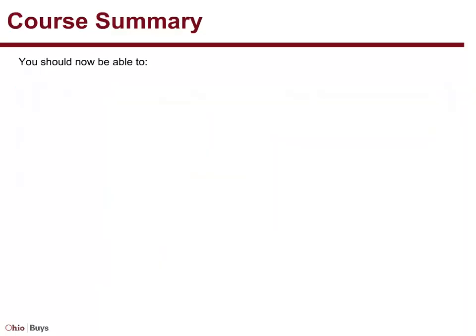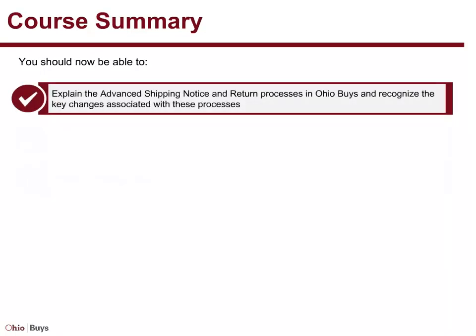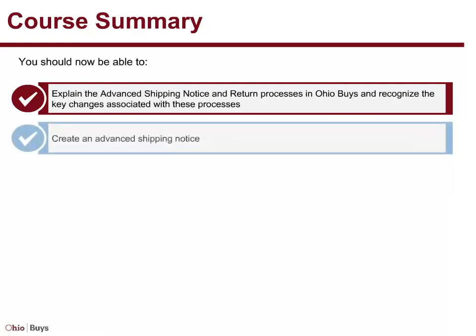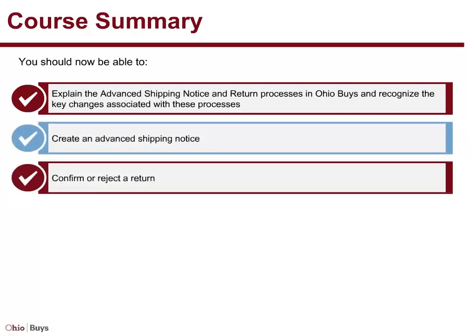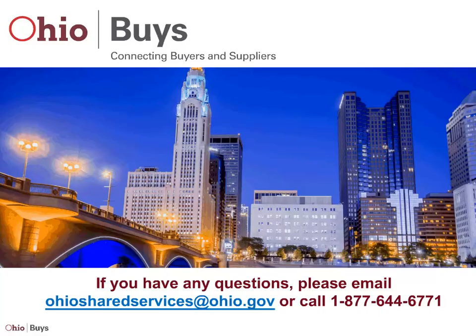You should now be able to: Explain the Advanced Shipping Notice and return processes in OhioBuys and recognize the key changes associated with these processes. Create an Advanced Shipping Notice, and confirm or reject the return. Thank you for taking this course. If you have any questions, please email OhioSharedServices at Ohio.gov or call 1-877-644-6771.